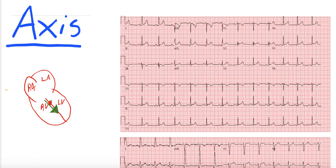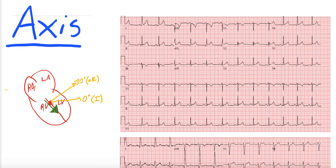So now let's draw some leads. This here is going to be minus 30 degrees — that's AVL. And this lead here is going to be 0 degrees — that's Lead 1. All of these are going to be limb leads. This lead here is going to be 60 degrees — that's Lead 2. And then straight down toward the foot is going to be 90 degrees — that's AVF.